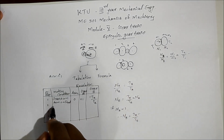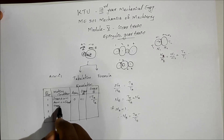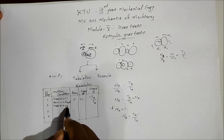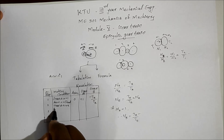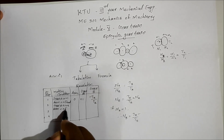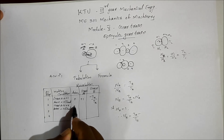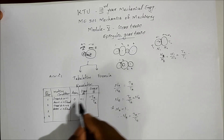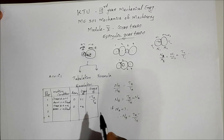The tabulation has steps. In Step 1, give Gear A a plus X revolution. In Step 2, Arm C is fixed — so the arm revolution is zero. With Gear A at plus X revolutions, the corresponding value is plus 1 for Gear A, and the gear B value is minus TA by TB, giving minus X times TA by TB.